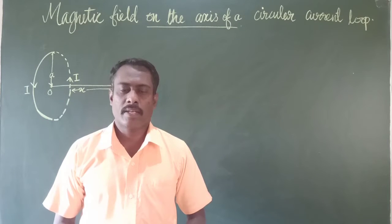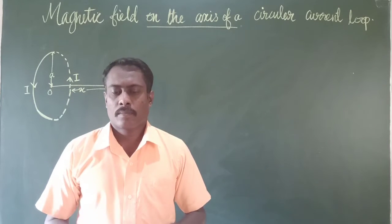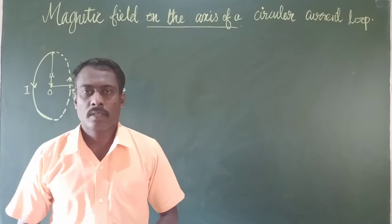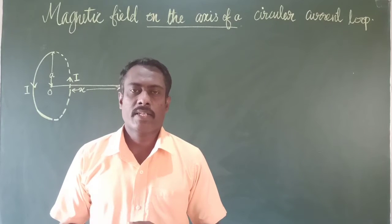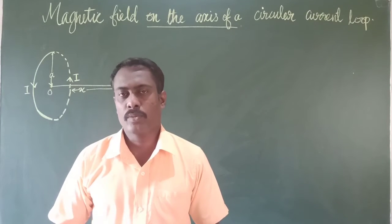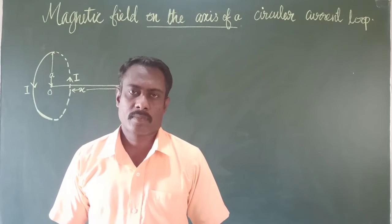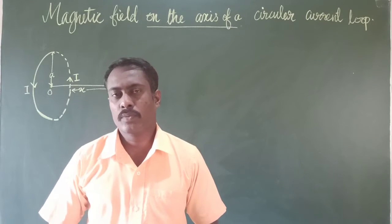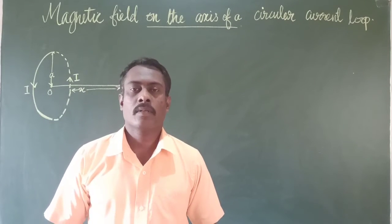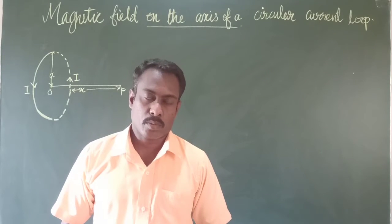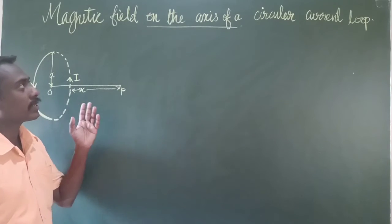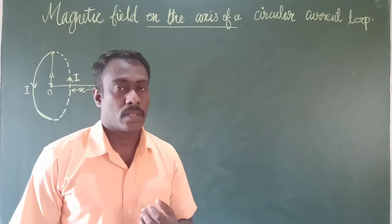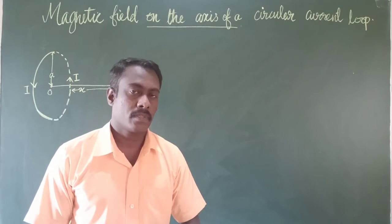Today we are going to learn about the magnetic field on the axis of a circular current loop. We have already learnt how to calculate the magnitude of the magnetic field produced by a current-carrying conductor using the Biot-Savart law, and here we use the Biot-Savart law to calculate the magnitude of the magnetic field on the axis of a circular current loop.